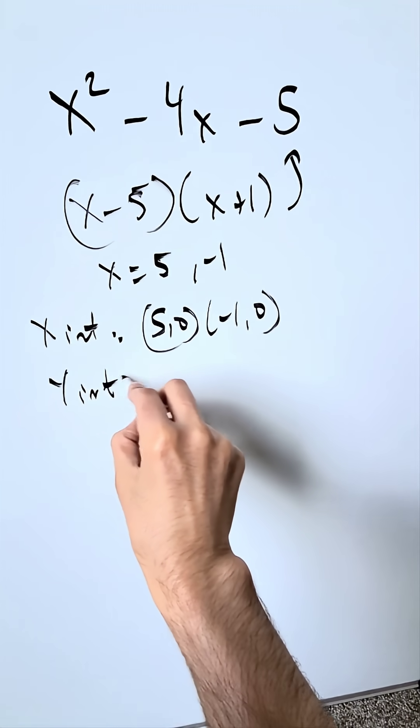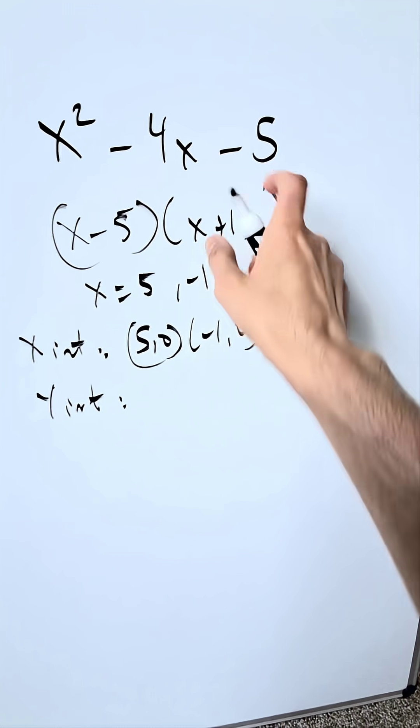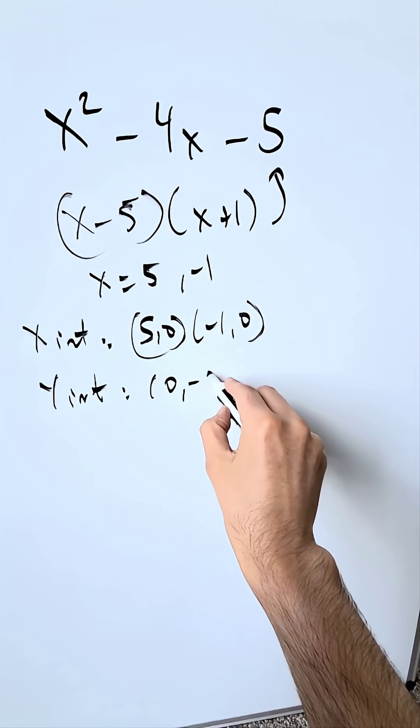I'm looking here now at my y-intercept. It's easy. Put 0 in places of x. You have a minus 5 so that's your y-intercept. 0 comma minus 5.